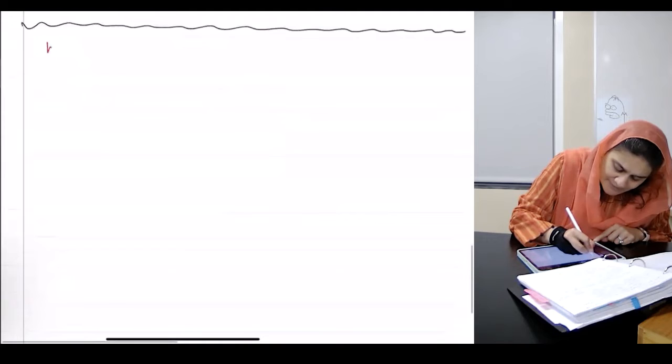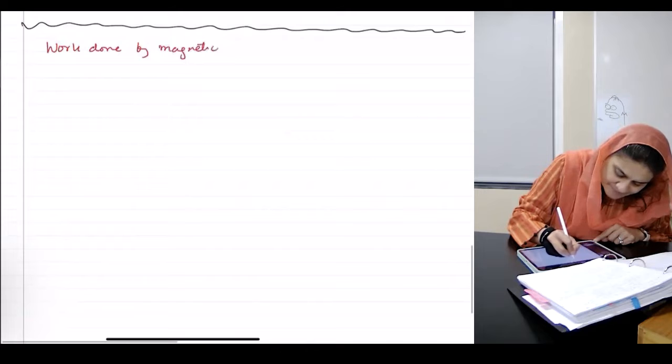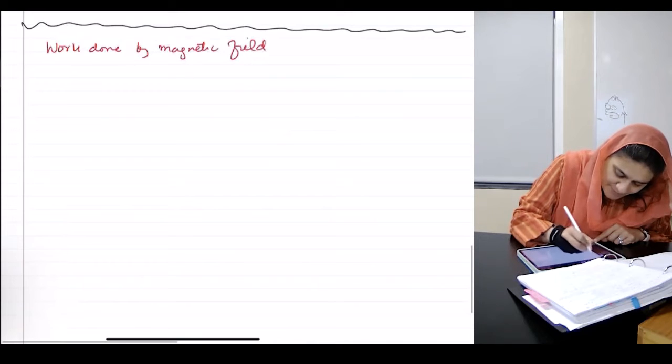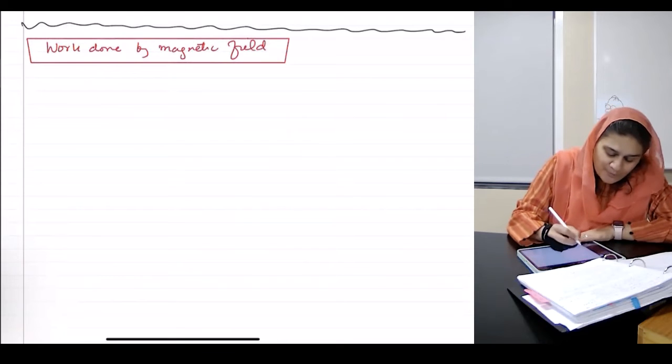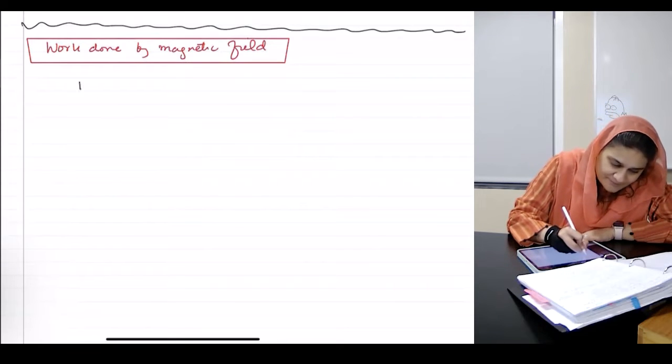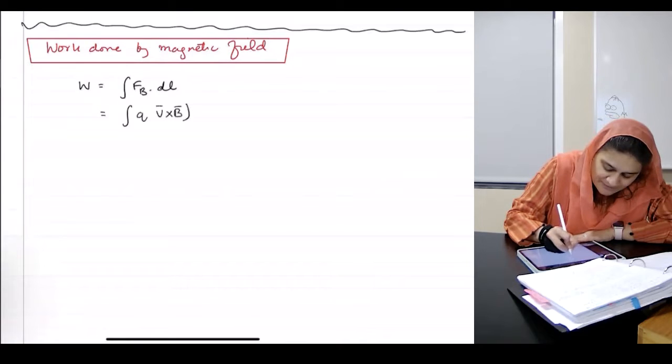Work done by magnetic fields on a particle. So we know work is what? FB dot DL. What is FB? QV cross B dot DL.